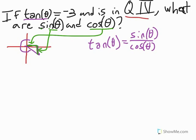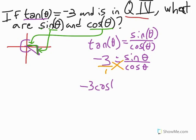So, we know that tangent of theta is also negative 3. So we can just replace tangent of theta with negative 3, and that equals sine of theta over cosine of theta. Well, now that we know negative 3 equals sine of theta over cosine of theta, what I would do is try to solve this algebraically by cross multiplying. Given that negative 3 is really negative 3 over 1, that's going to give us negative 3 cosine of theta equals sine of theta.